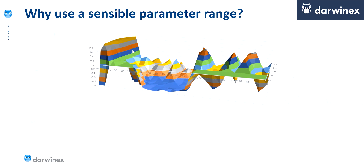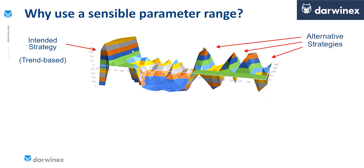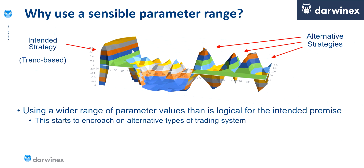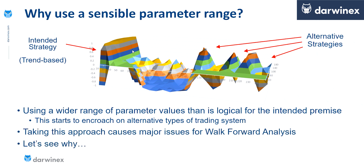This is the optimization surface that we used in our previous example, where we said that the area to the left of the surface represented the parameter values that were in line with a trend-based system premise. And the peaks in the surface that you see on the right-hand side are more aligned to a mean reversion system. So by using this wide range of parameter values that encompasses multiple different system premises, this has a huge impact on the walk-forward analysis process.